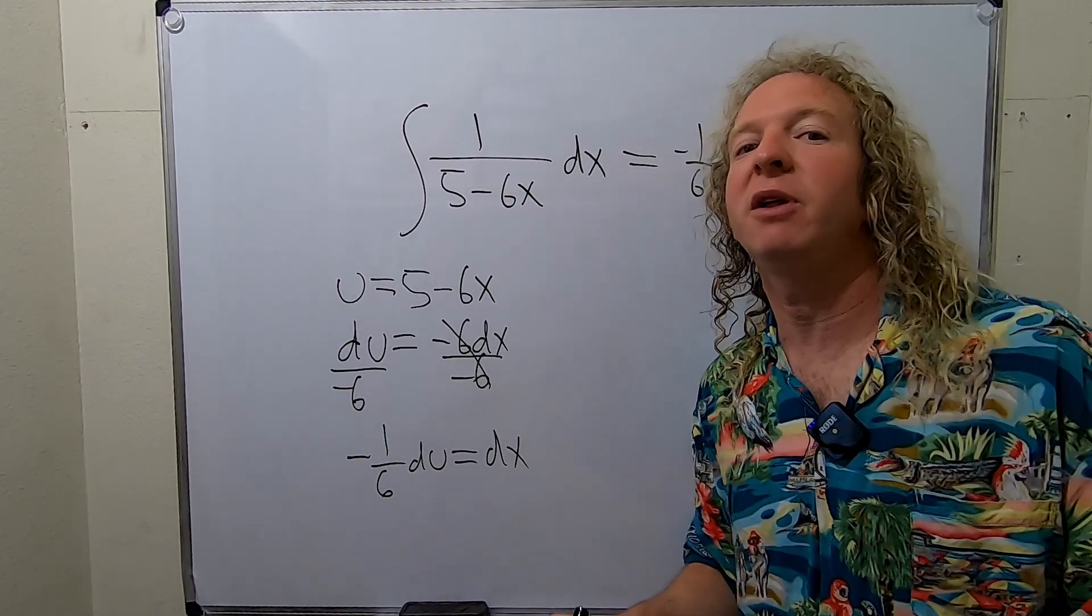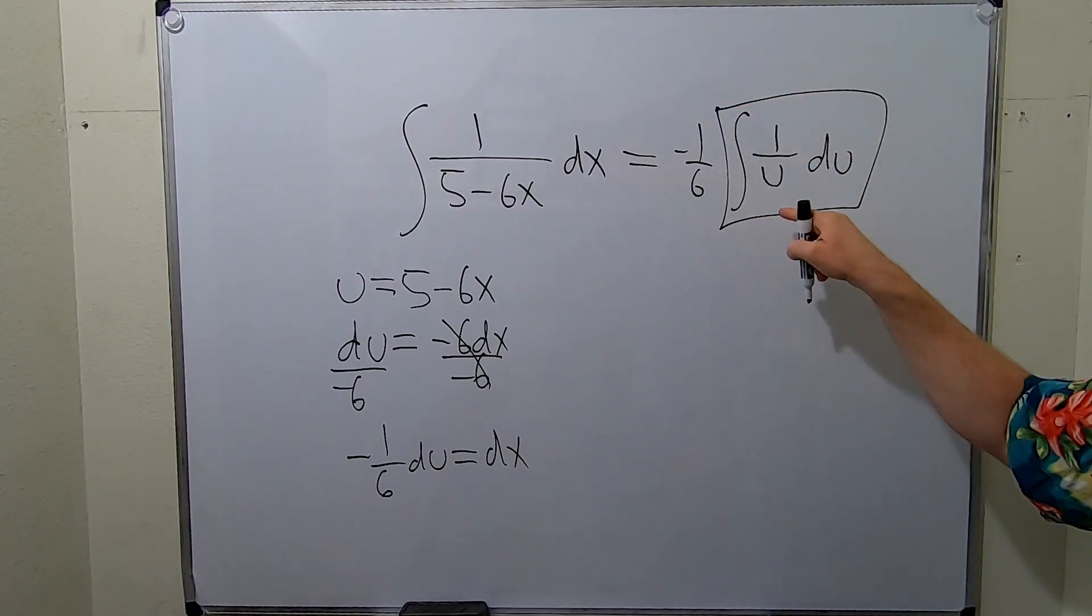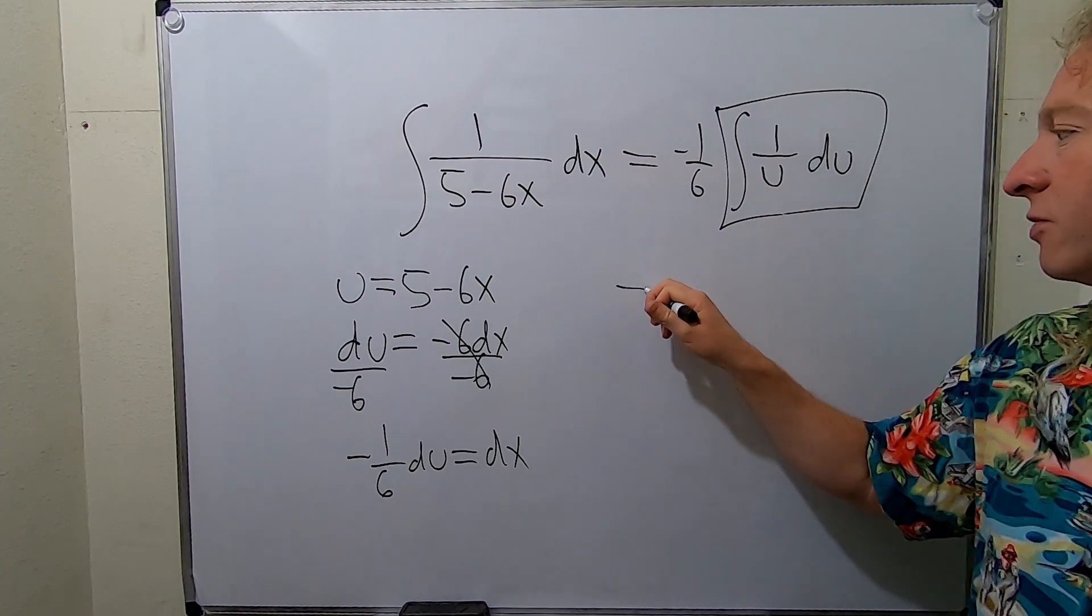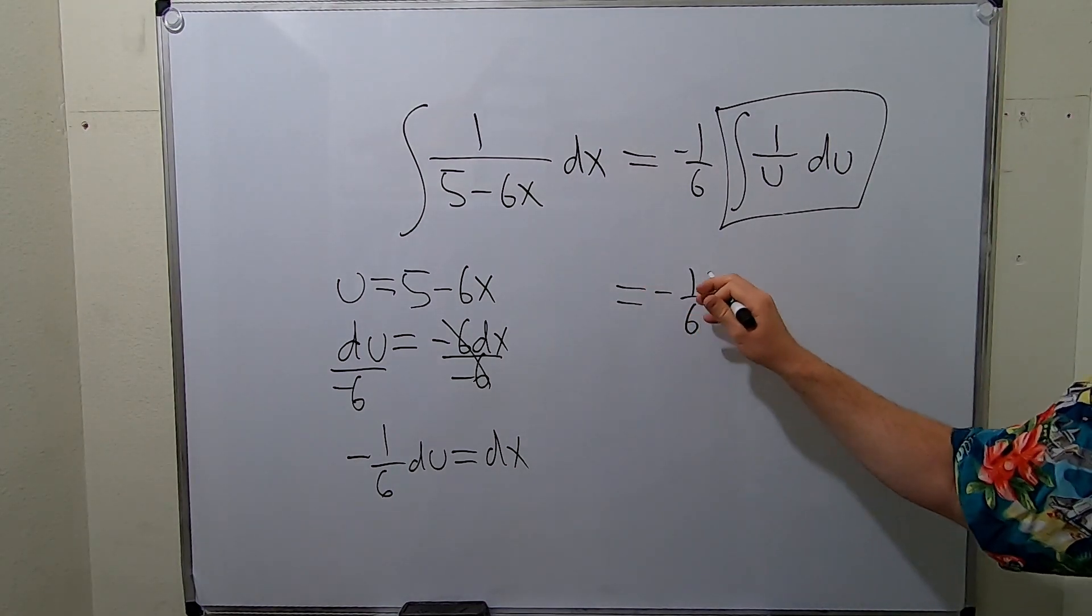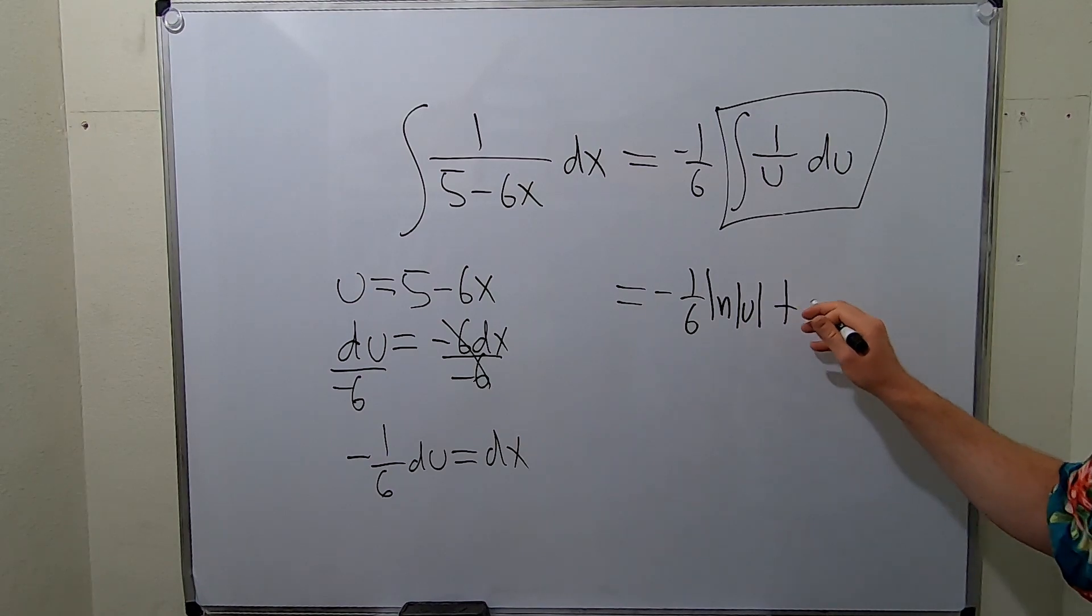So now this is the formula that we were using from the beginning. This is going to become the natural log of the absolute value of u. So this is equal to negative 1 sixth natural log absolute value of u, and then don't forget the plus c.